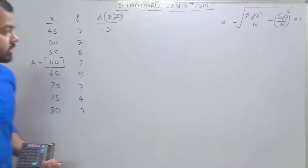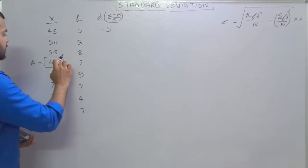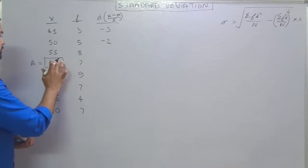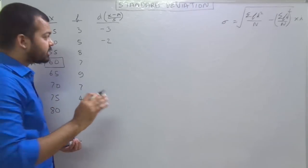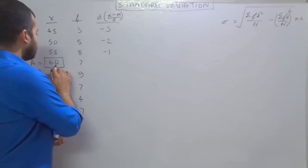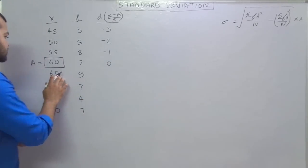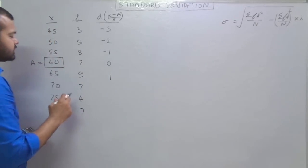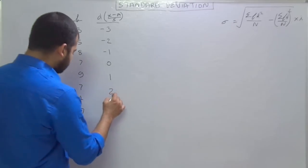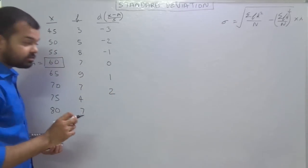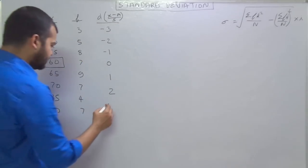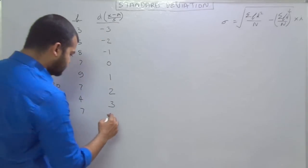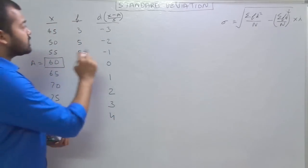For the other numbers: 50 minus 60 is minus 10 divided by 5, which is minus 2. 55 minus 60 is minus 5 divided by 5, which is minus 1. For 65 minus 60, that is 5 divided by 5, which is 1. 70 minus 60 is 10 divided by 5, which is 2. 75 minus 60 is 15 divided by 5, which is 3. 80 minus 60 is 20 divided by 5, which is 4. So this is how we calculate deviation.